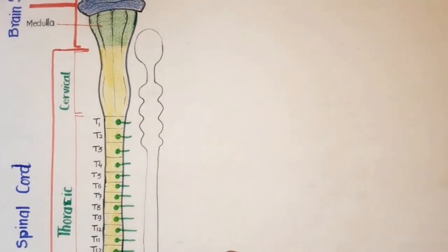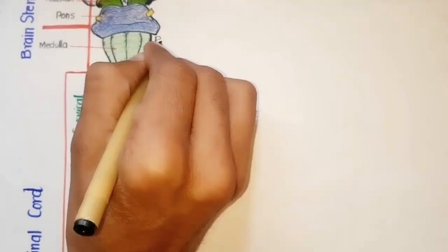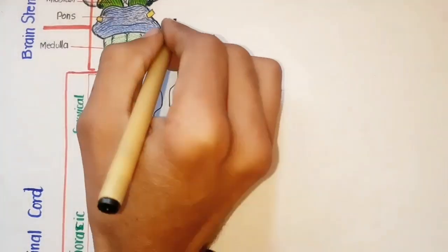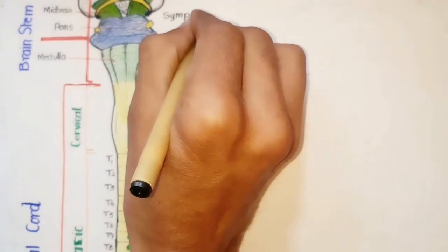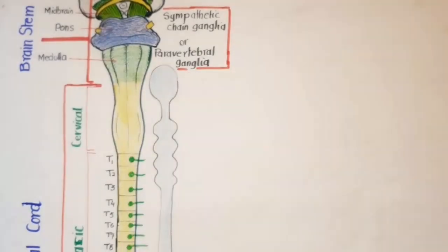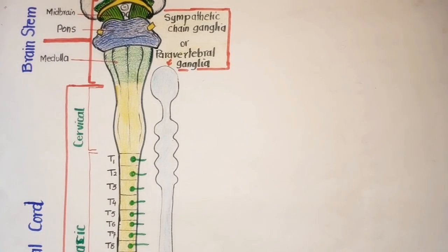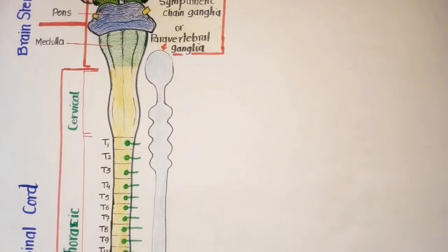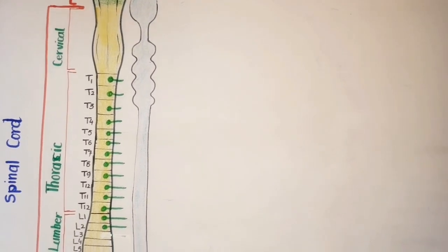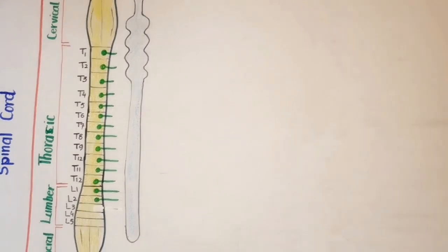Ganglia are structures located outside the CNS in which preganglionic neurons synapse with postganglionic neurons. The important sympathetic ganglia in our body include the paravertebral, or sympathetic chain ganglia, which are arranged in a longitudinal segmental manner on both sides of the vertebral column. Each ganglion is interconnected with the others by a nerve trunk, and both chains extend from the skull to the coccyx.